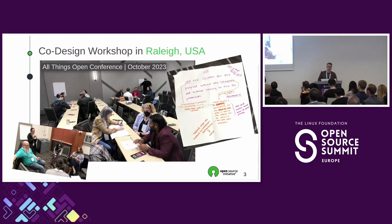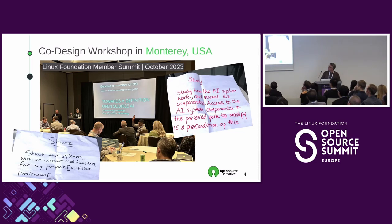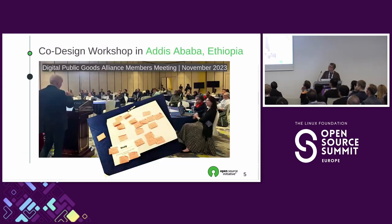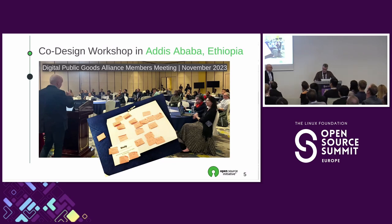There are a few slides showing some of these co-design workshops — at the Linux Foundation Member Summit, and even at the Digital Public Goods Alliance. Out of that co-design process, one of the first artifacts was a preamble that looks a lot like the FSF four freedoms: use, study, share, modify. How did you arrive at that concept as the end goal for the definition?